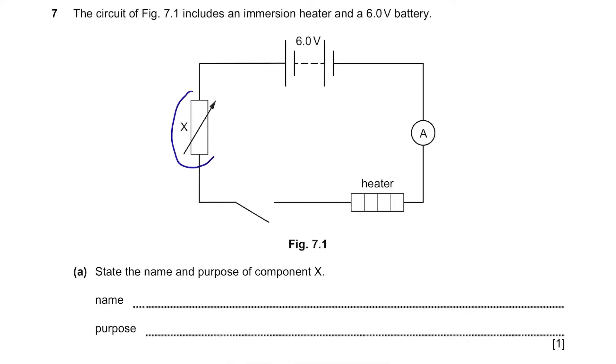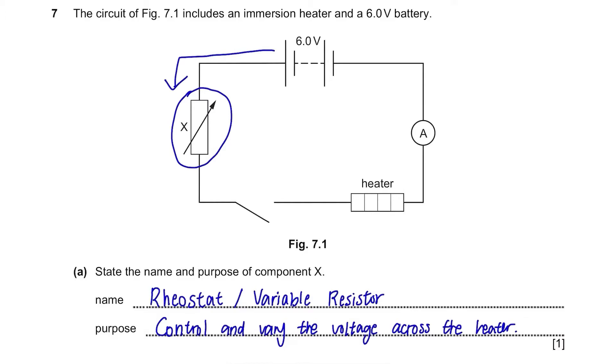This box with a diagonal arrow on it. This is called the rheostat or the variable resistor. Its purpose is to control and vary the voltage across heater. The voltage is coming from here, so it will decide how much voltage will flow through this to the heater.